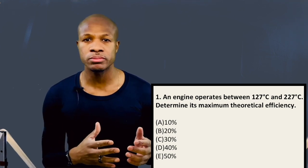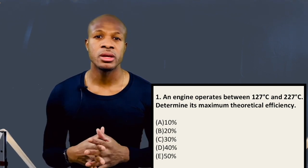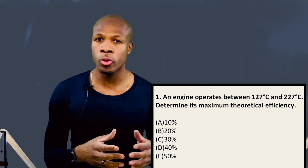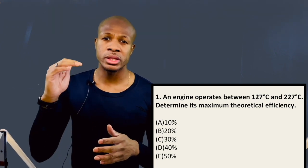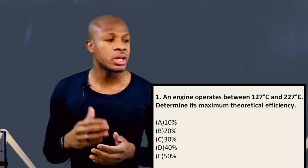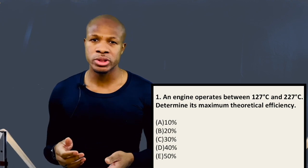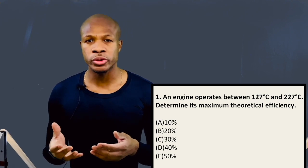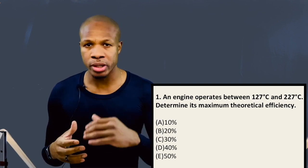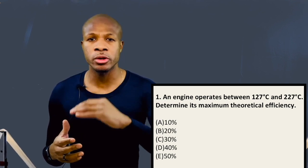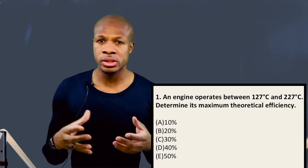This is a very straightforward question. First thing we want to do is make sure that we understand what the question is asking, so that way we can know what we have to do to figure out the answer. The question says that we have an engine and it's operating between two temperatures: a high temperature of 227 degrees Celsius and a low temperature of 127 degrees Celsius.